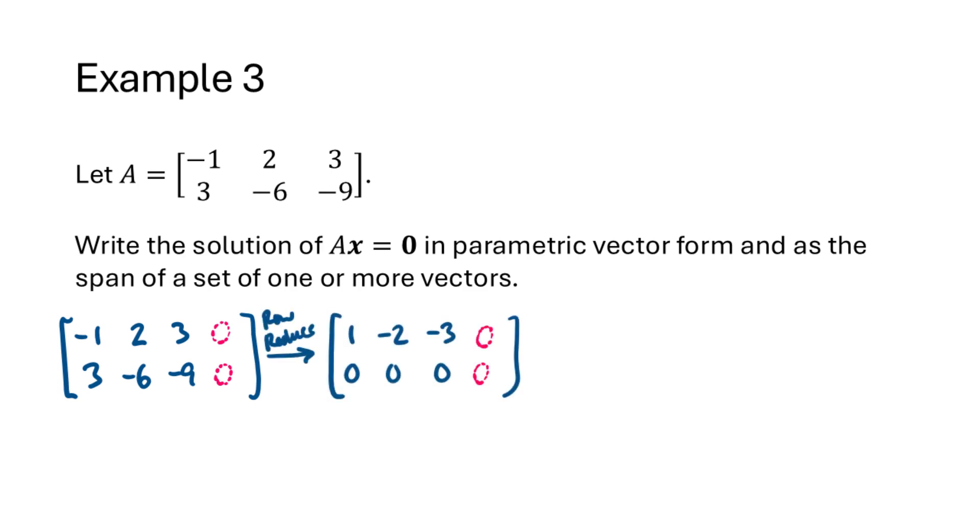So we row reduce our matrix using whatever process we like, and then we try to interpret this row reduced matrix. We write our general solution, which in this case tells us that x1 equals 2x2 plus 3x3, and x2 and x3 are free variables. And now we write this solution in parametric vector form. We write the vector x equaling the variables x1, x2, x3. From our general solution, we know that x1 can be written as 2x2 plus 3x3. And then for the free variables, we simply write those as equal to themselves. So x2 equals x2, and x3 equals x3.